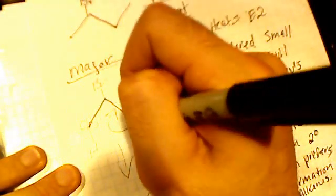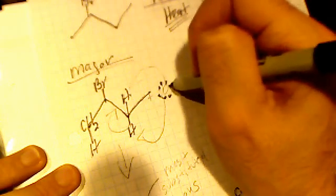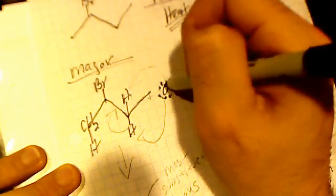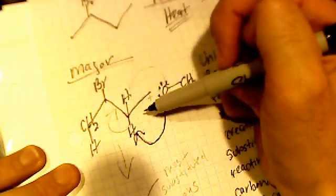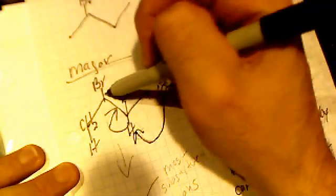First, let's look at what the major product would be. It's going to follow Zaitsev's rule, so it wants to create the most substituted alkene. It's going to attack the secondary carbon and prefer the hydrogen when it's in the anti position to the bromine. That bond forms, the bromine breaks off, and we get our major product, which is a trans alkene.